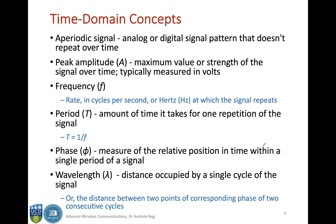We can also have an aperiodic signal which doesn't follow a repeating pattern. The peak amplitude of a signal is defined as the maximum value of the signal over time, typically measured in volts. The frequency is the rate in cycles per second (Hertz) at which the signal repeats. The period T is related to frequency by T = 1/F. The phase is the measure of the relative position in time within a single period. The wavelength is the distance occupied by a single cycle — the distance between two corresponding phase points of two consecutive cycles.